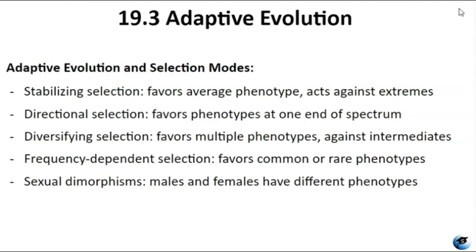Another type of selection, called frequency-dependent selection, favors phenotypes that are either common or rare. An interesting example is observed in Pacific Northwest lizards — male common side-blotched lizards exhibit three throat-colored patterns: orange, blue, and yellow, each corresponding to a different reproductive strategy. Orange males are strong and fight for females; blue males form strong pair bonds; yellow males resemble females to sneak copulations. Like a game of rock-paper-scissors — orange beats blue, blue beats yellow, and yellow beats orange — selection favors orange males when blue dominates, blue males when yellow dominates, and yellow males when orange dominates, resulting in varying distributions of these phenotypes over generations.